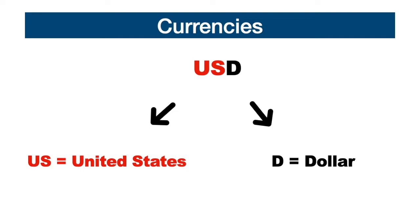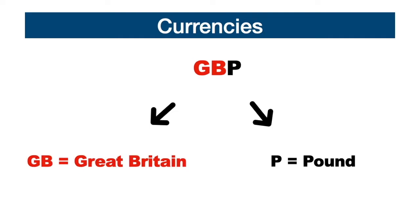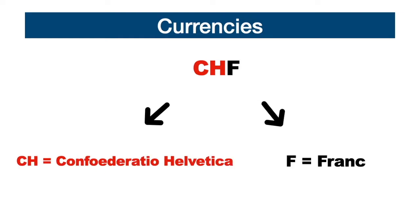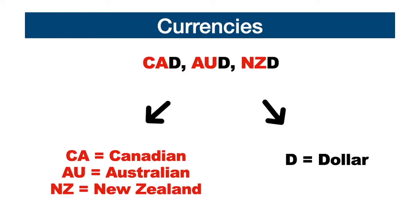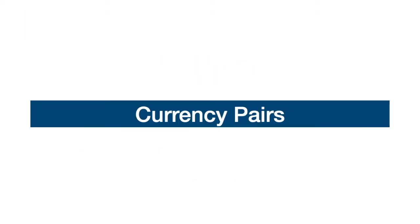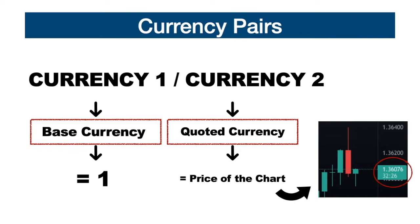This is the breakdown for the US dollar, the British pound, the Japanese yen, the Swiss franc, the Canadian dollar, the Australian dollar, and the New Zealand dollar. The only exception to this rule is the euro. In the forex market, currencies are traded in the form of pairs. In a pair, the first one represents the base currency, while the second one represents the quoted currency. The base currency always equals one, while the value of the quoted currency is always equal to the price found on the chart.